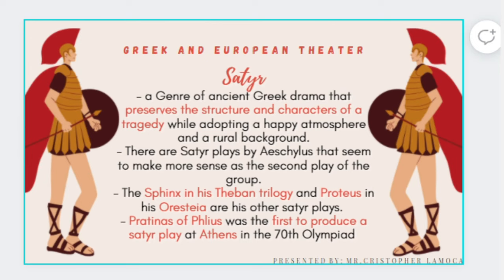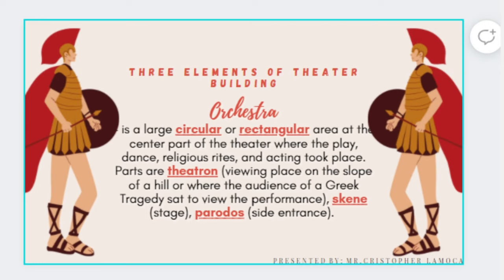The satyr is a genre of ancient Greek drama that preserves the structure and characters of tragedy, but adopts a happy atmosphere and a rural background. Aeschylus wrote several satyr plays. Pratinas of Phlius was the first to produce a satyr play at Athens in the 70th Olympiad.